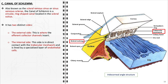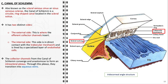As the aqueous humor exits the canal of Schlem, it enters the collector channels, which converge and anastomose to form an intrascleral plexus. This plexus serves as a transitional network leading to the formation of aqueous veins, the final conduits for the aqueous humor, directing it into the systemic circulation. The efficient functioning of the canal of Schlem and its associated structures is vital for ocular health, particularly in preventing and managing conditions like glaucoma, where impaired drainage of aqueous humor leads to increased intraocular pressure.